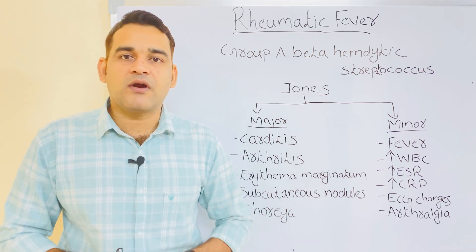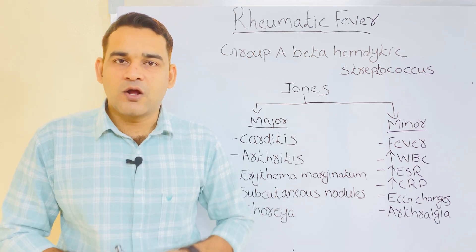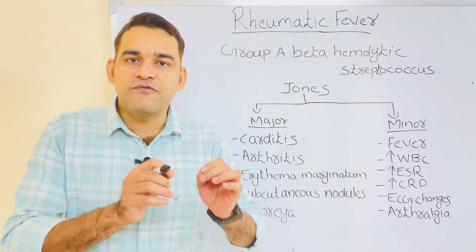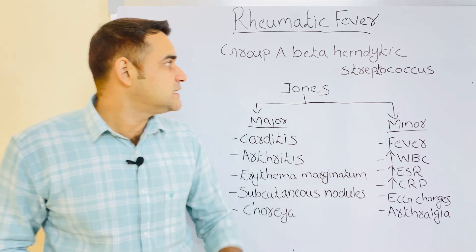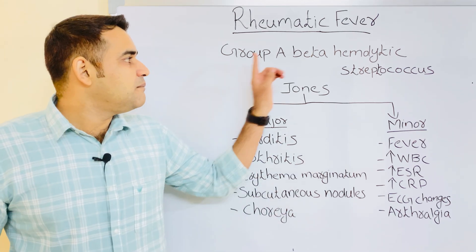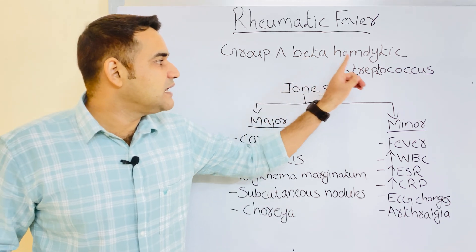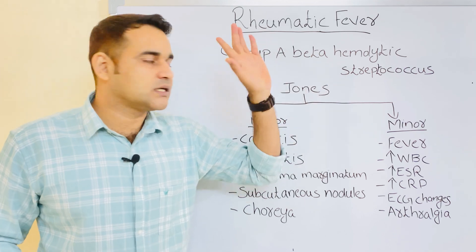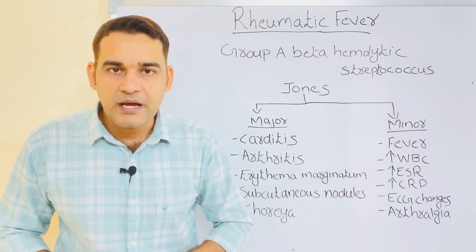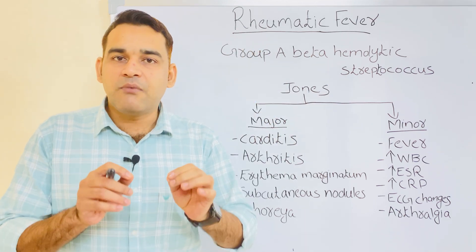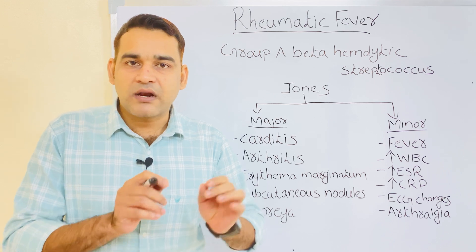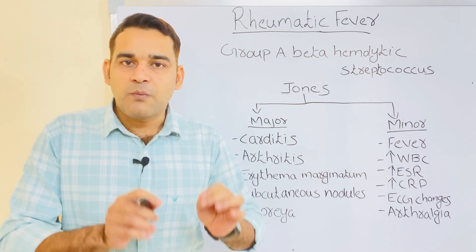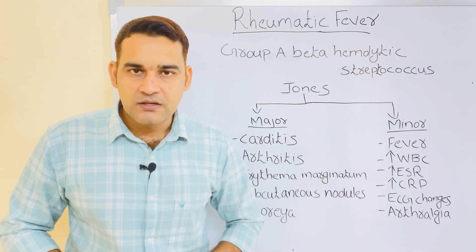The causative organism of rheumatic fever is very important for your exam — that is Group A beta-hemolytic streptococcus. Group A beta-hemolytic streptococcus is the causative organism of rheumatic fever.